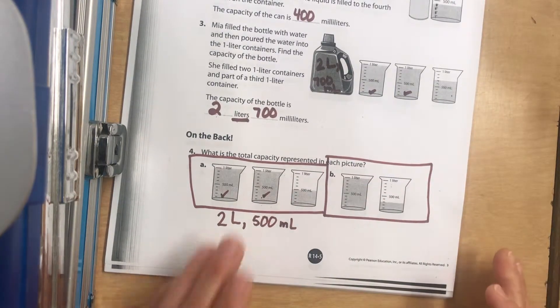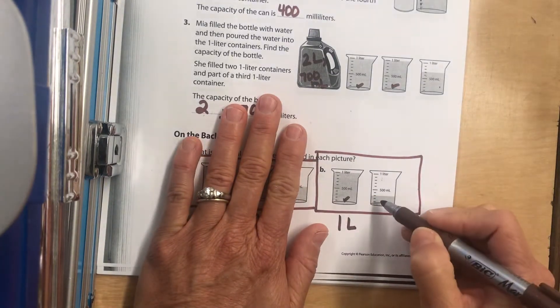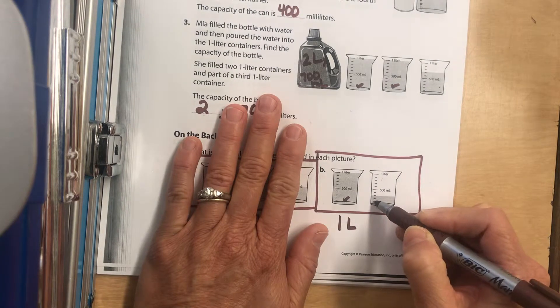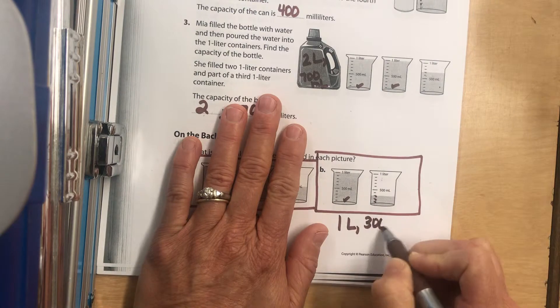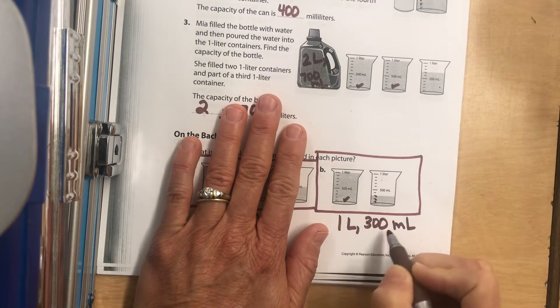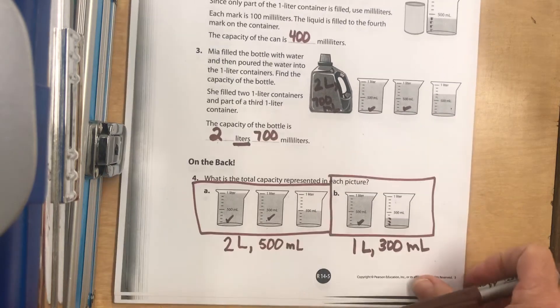Now let's look at this one. There's definitely one liter, and then if this is five hundred, it's one hundred, two hundred, three hundred. So one liter and three hundred milliliters. Great job, see you tomorrow!